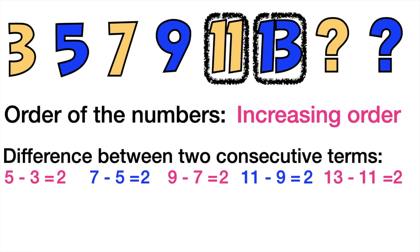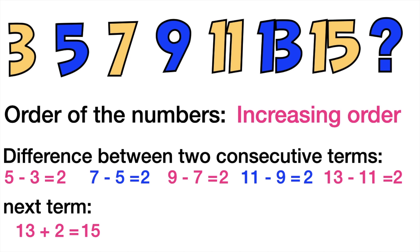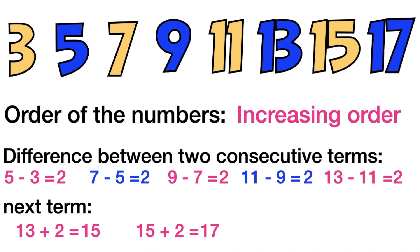As you can see, the difference between two consecutive terms is always two. So to find the next term, we need to add two to thirteen. Since it is in increasing order, if the order of the numbers is increasing, you are going to add the difference to the last term to find the next missing term. We have thirteen plus two equals fifteen — the first missing term is fifteen. Then fifteen plus two equals seventeen. So our missing terms are fifteen and seventeen.